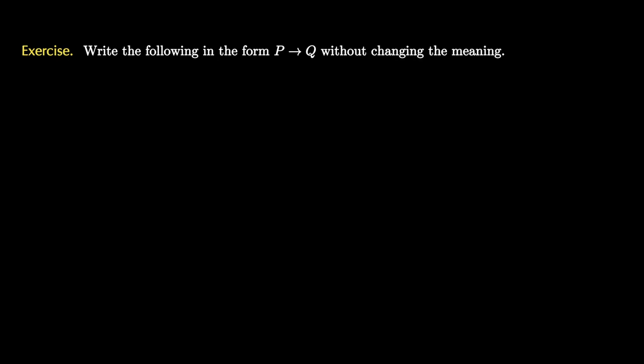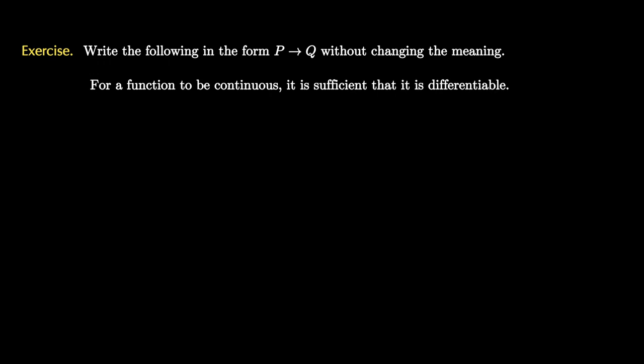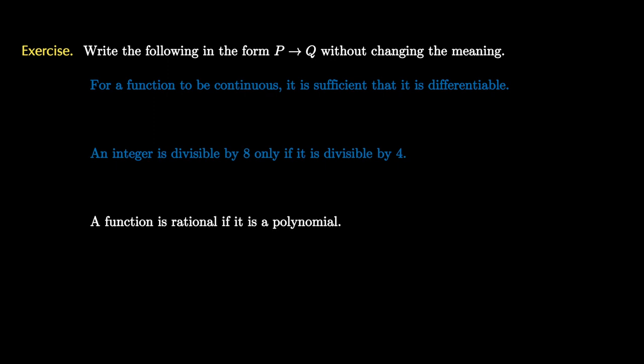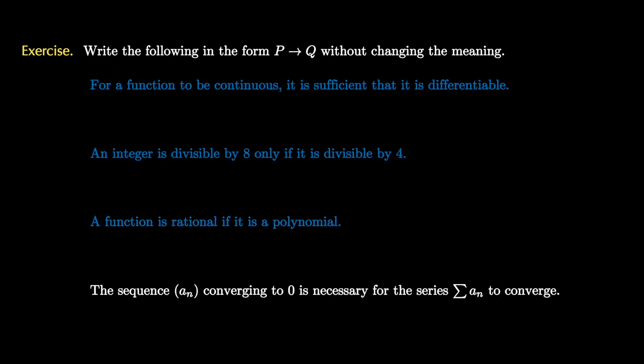Let's look at a few examples where we try to write a proposition of the form p implies q without changing its meaning. The first: 'for a function to be continuous, it is sufficient that it is differentiable.' The second: 'an integer is divisible by 8 only if it is divisible by 4.' The third: 'a function is rational if it is a polynomial.' And the fourth: 'the sequence a_n converging to zero is necessary for the series a_n to converge.' Pause the video and think about these for a bit.